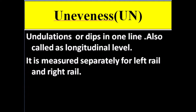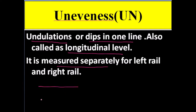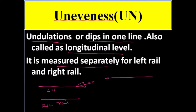Unevenness means the undulations — dips in one line of track, also called longitudinal level. It is measured separately for the left rail and the right rail. You take one rail at a time: this is the LH rail and this is the RH rail. Whatever ups and downs are there in a single rail, that is called unevenness. You measure these undulations separately for the left rail and separately for the right rail.